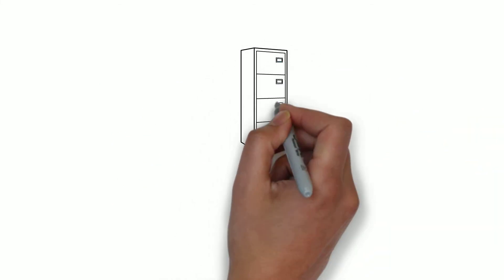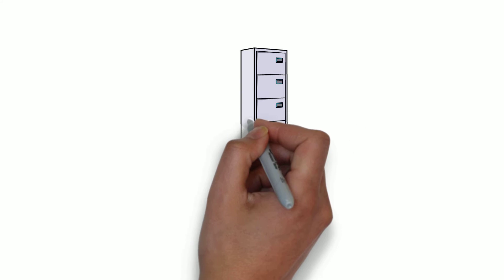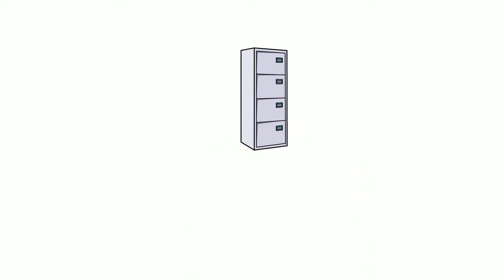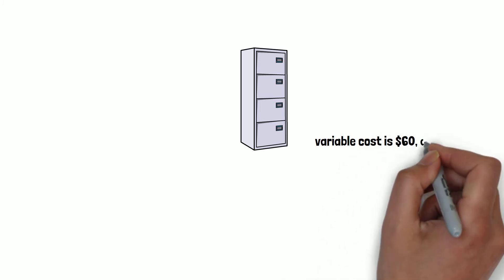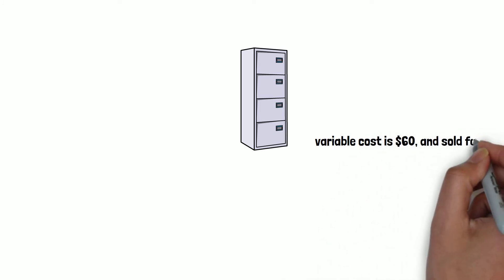Okay, suppose we have furniture. This furniture, the variable cost of each unit of the furniture is $60, and we sell it for $80.